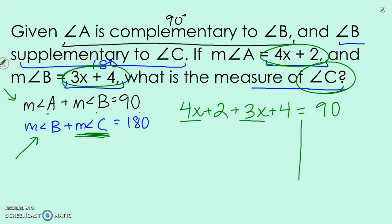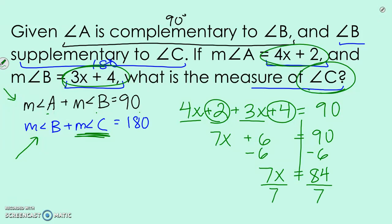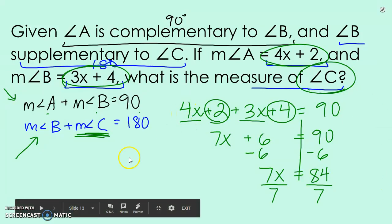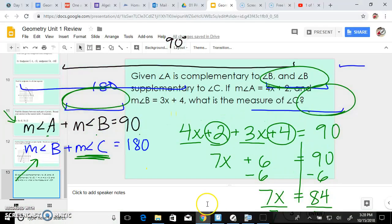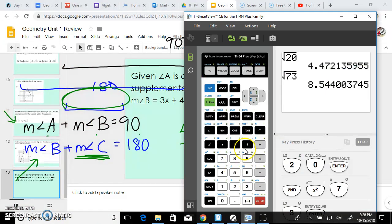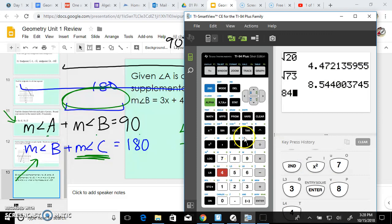So 4x plus 3x, let's combine those to 7x. So 2 plus 4 becomes 6, equals 90. Let's subtract 6 from both sides. Divide by 7. And I'm just going to double check in my calculator, because this is not one time where I want to make a mathematical error. So I'm doing 84 divided by 7. I think it's 12, but I just want to make sure.